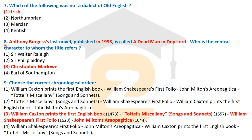Question eight: Anthony Burgess's novel published in 1993 is called 'A Dead Man in Deptford' — who is the central character to whom the title refers? This was the last novel of Anthony Burgess, published in 1993, and it is related to the life, achievements, and events in the life of Christopher Marlowe, who was the central character.